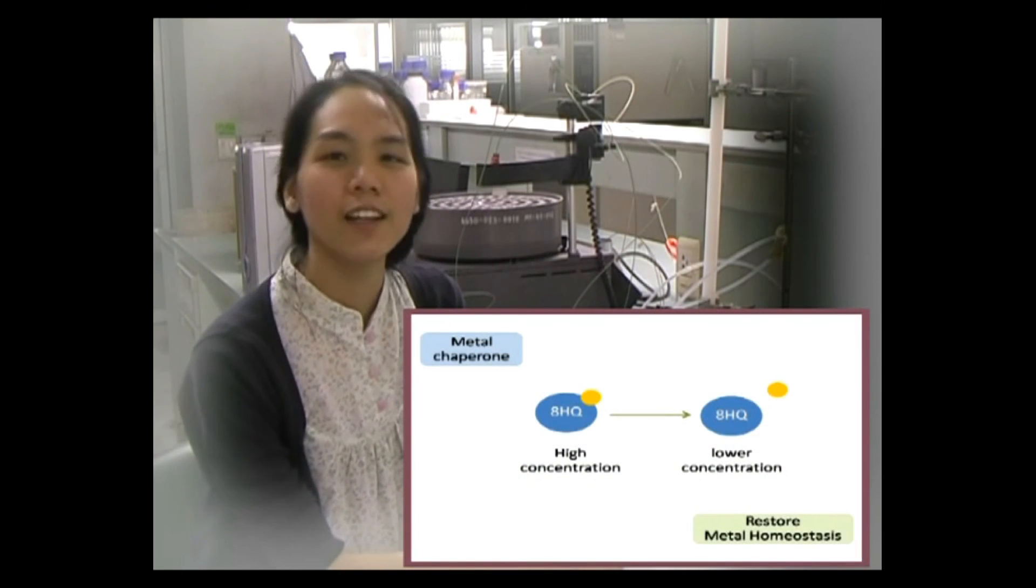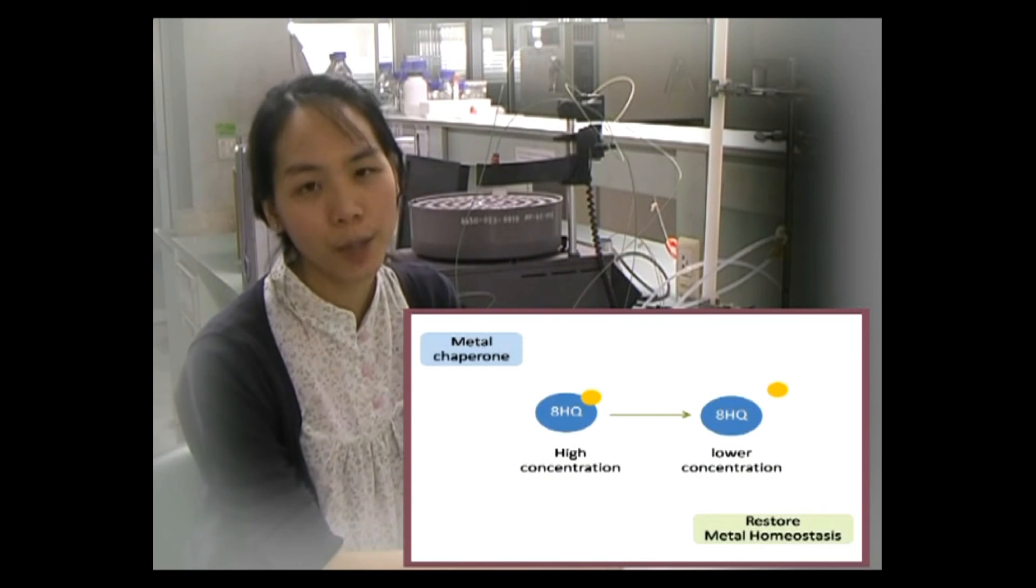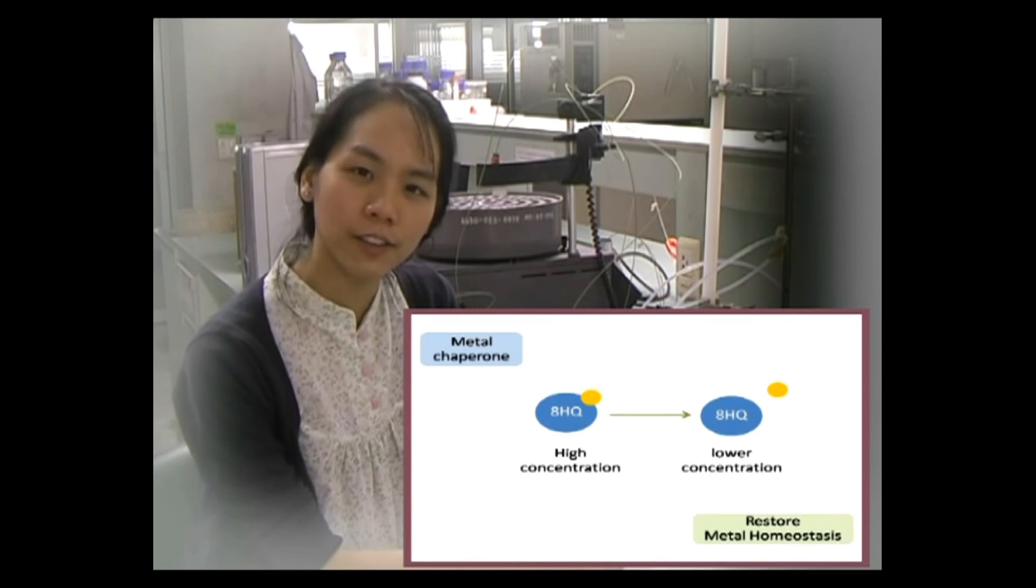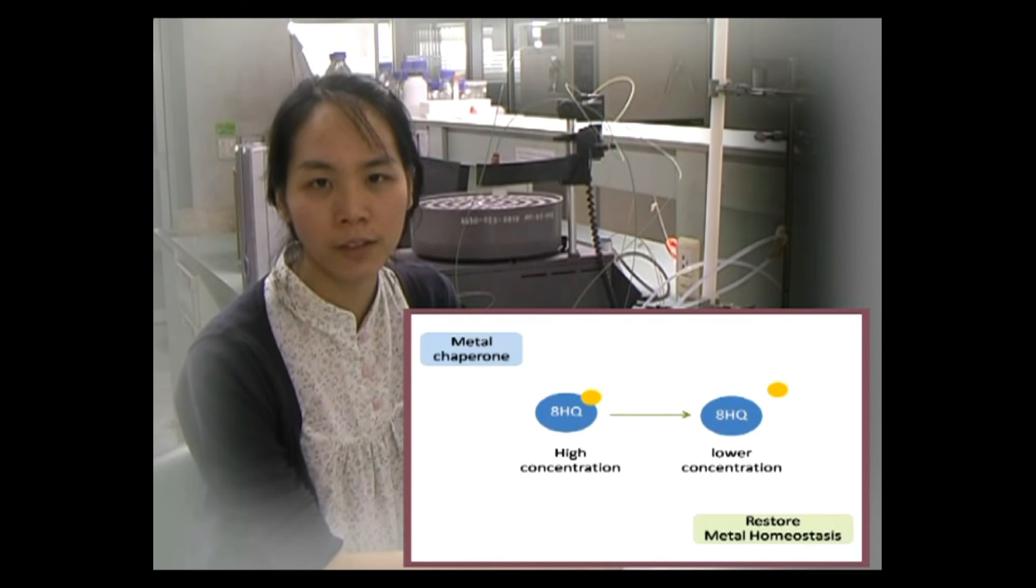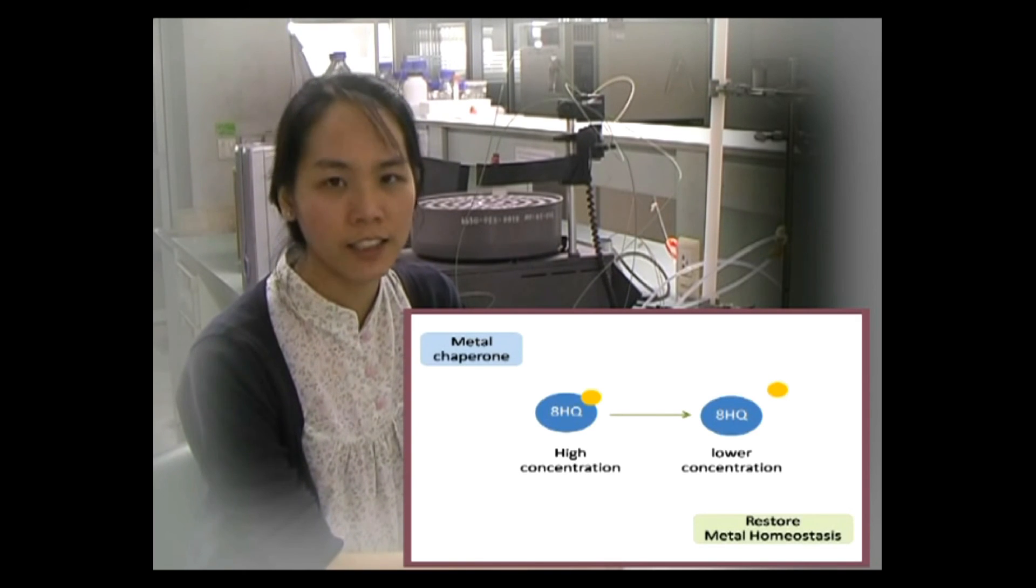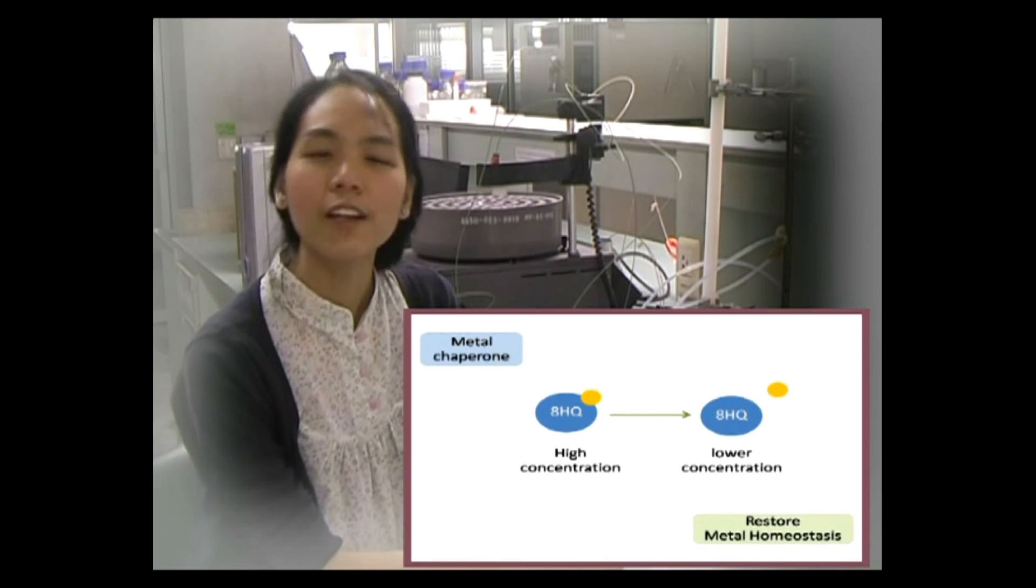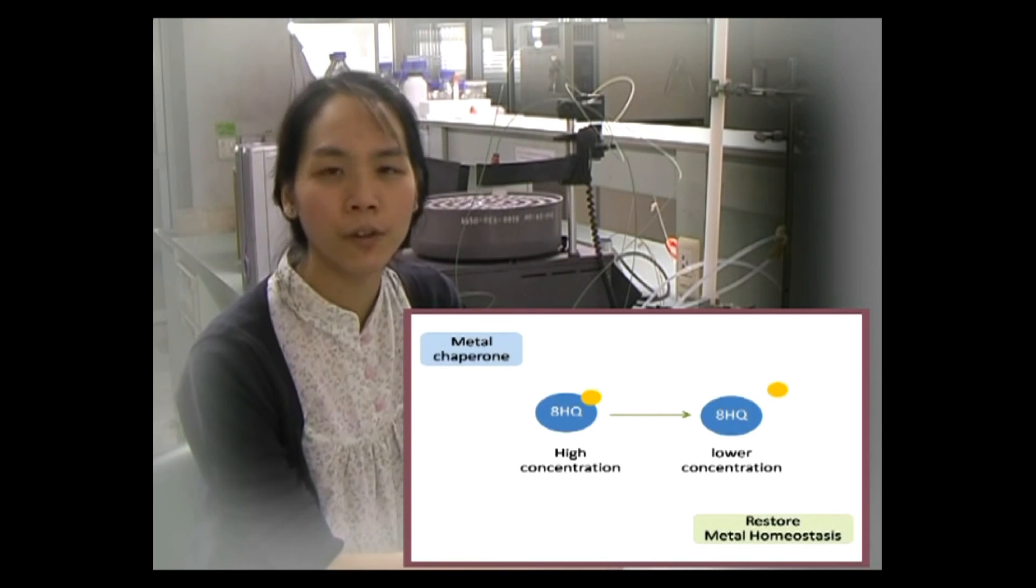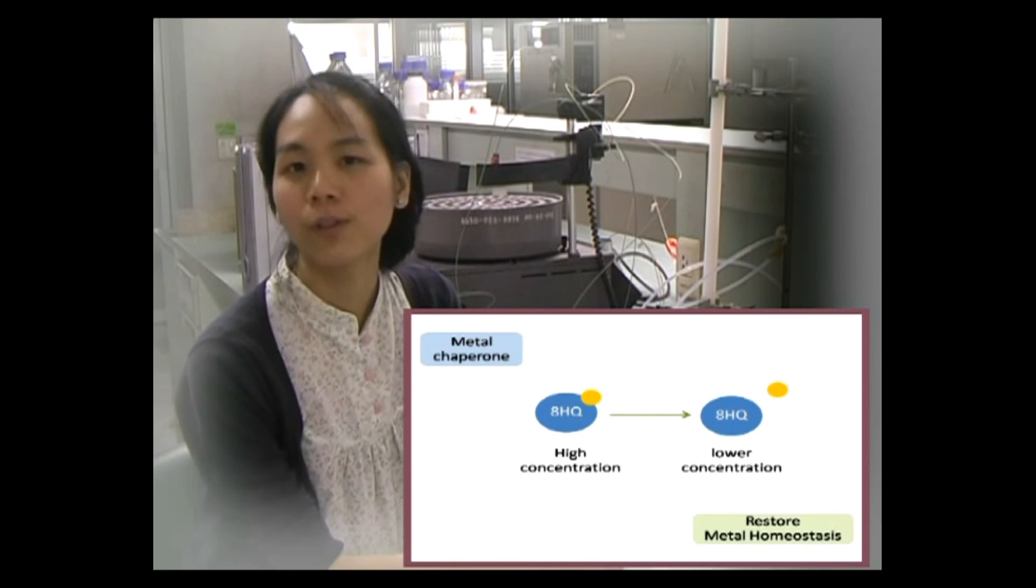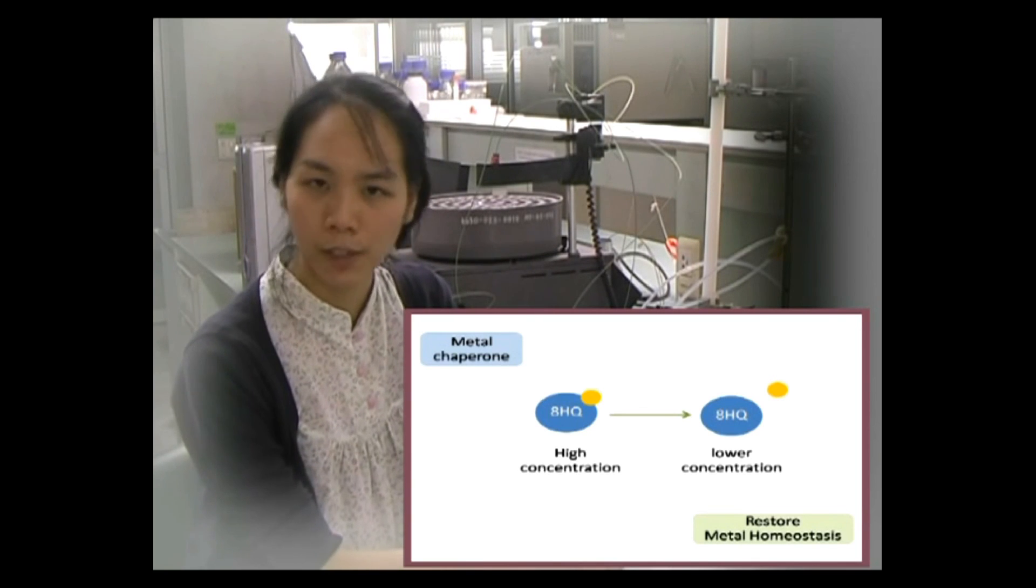Like this, A-Hydroxyquinolene can also act as metal ionophores in which it can chelate the metal ions from higher concentration brain areas, then deliver and release them in the area where they are depleted. Regarding this, A-Hydroxyquinolene not only prevents neuronal damages, but also can restore metal homeostasis in the brains as well.